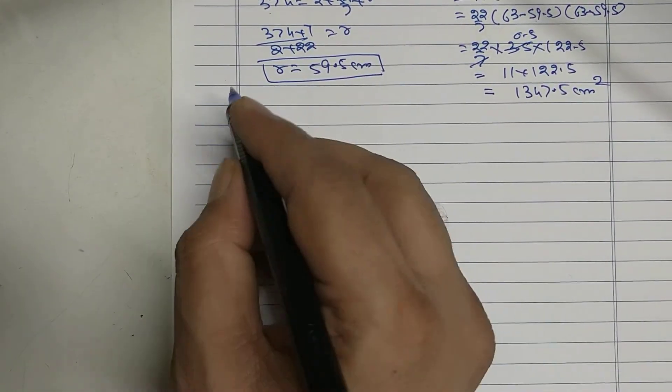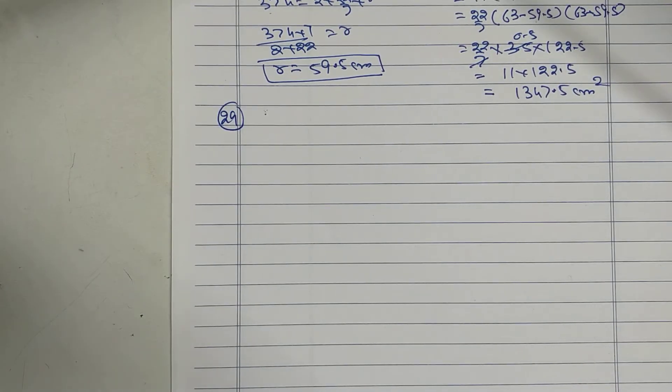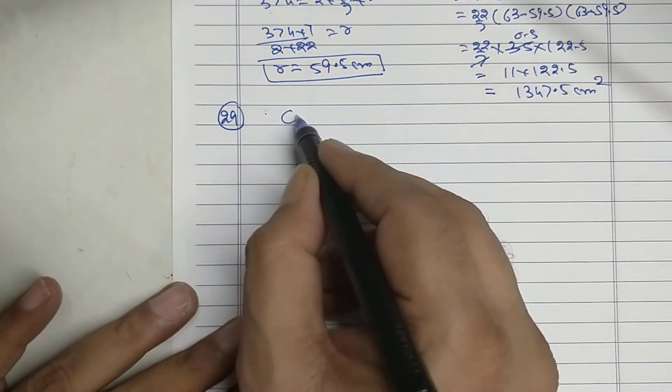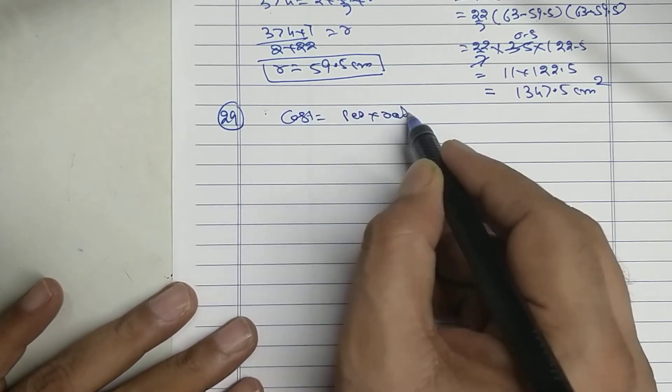Sum number 29. There is a field. Fencing is given. Cost equals perimeter into rate.